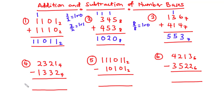For example 4 we are working in base 4, so whatever we borrow is 4, not 10. Starting from the right: 1 minus 2 is not possible because 1 is less than 2, so we borrow from the next digit which is 2. That 2 becomes 1, and what we borrow is 4. So we have 4 plus 1 which is 5, and 5 minus 2 is 3.